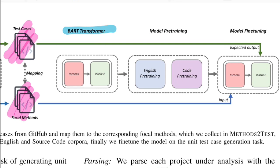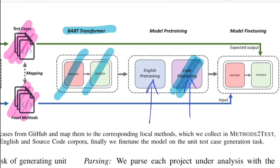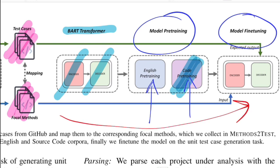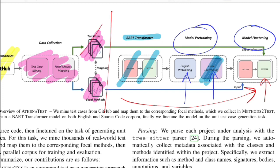The pipeline works as follows: starting with 70,000 GitHub repositories, heuristics are applied to get the mapping of focal methods to test cases, yielding two files mapped one-to-one. A pre-trained BART transformer — a sequence-to-sequence model with encoder and decoder, pre-trained via a denoising objective on English — undergoes an additional code pre-training stage, followed by fine-tuning on the focal method and test case task.